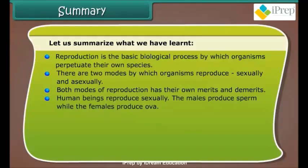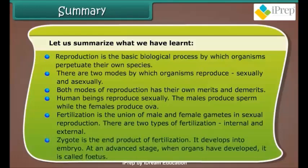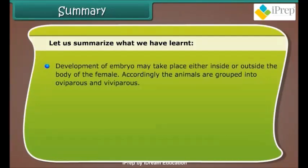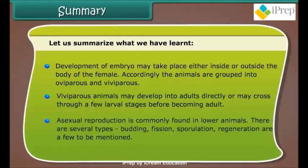Human beings reproduce sexually; males produce sperm while females produce ova. Fertilization is the union of male and female gametes, with two types: internal and external. The zygote, the end product of fertilization, develops into an embryo; at an advanced stage when organs have developed, it is called a fetus. Development of the embryo may take place either inside or outside the body of the female; accordingly, animals are grouped into oviparous and viviparous.